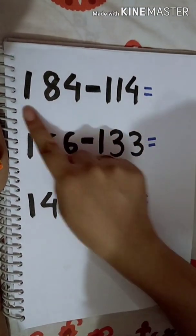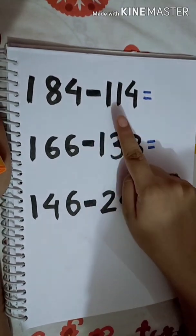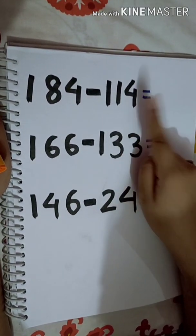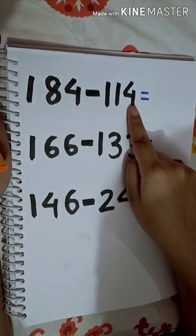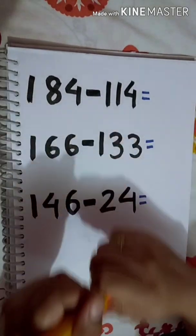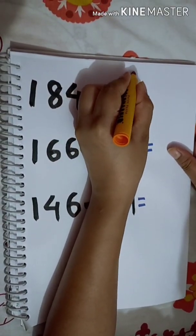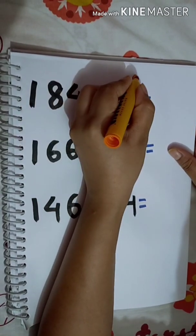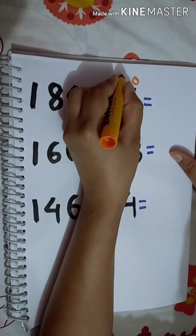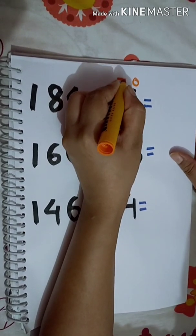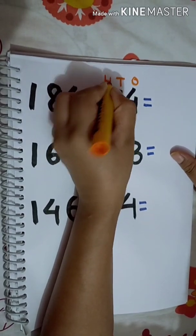The first question of horizontal subtraction is 184 minus 114. The first rule of horizontal subtraction is we have to place the number according to the position. In 114, 4 is in the 1's place so I will write O, 1 is in the 10's place so I will write T, and 1 is in the 100's place so I will write H.